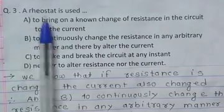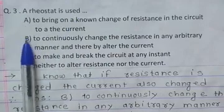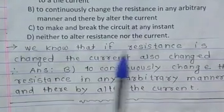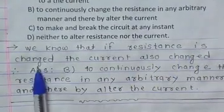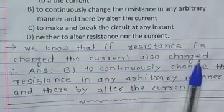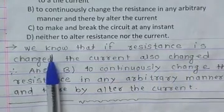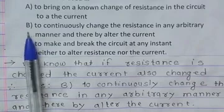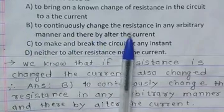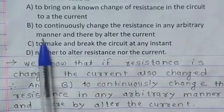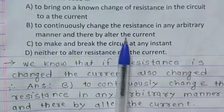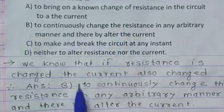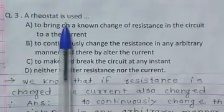Question 3: A rheostat is used for what? We know that if resistance is changed, the current also changes. To continuously change the resistance in any arbitrary manner and thereby alter the current. So the correct option is B.